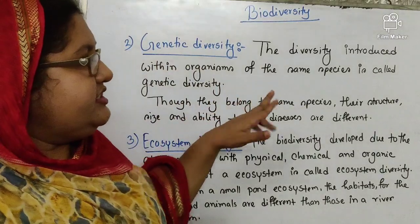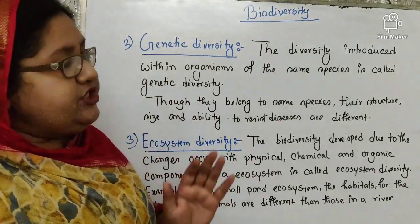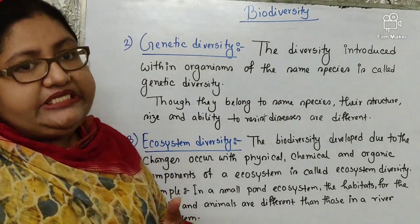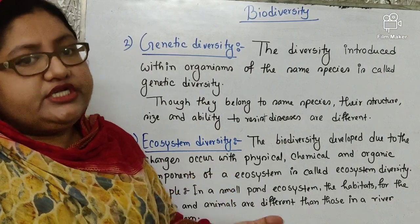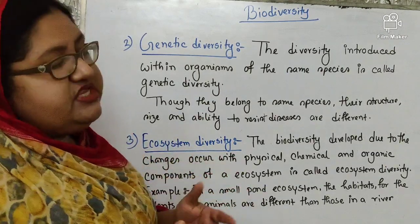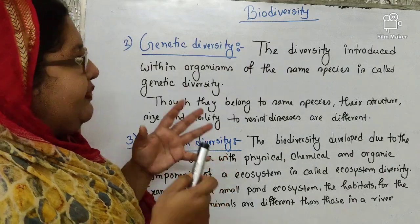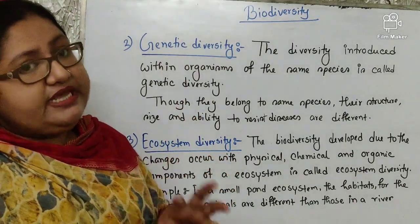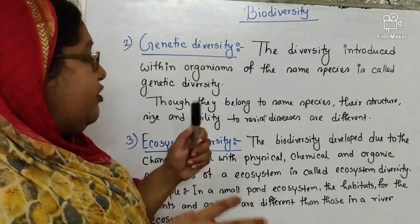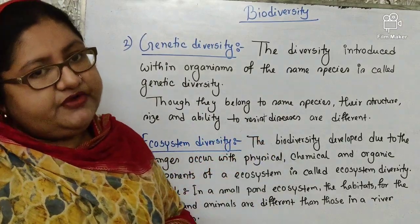Genetic diversity. The diversity introduced within the organisms of the same species is called genetic diversity. Genetic diversity occurs due to hereditary materials. Through hereditary materials, genes are transferred from one generation to the next generation. It occurs within the same species, but it causes changes or diversification among the organisms of the same species. Though organisms belong to the same species, their structure, size, and ability to resist diseases are different.